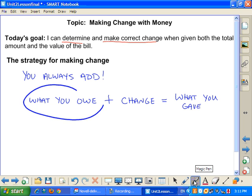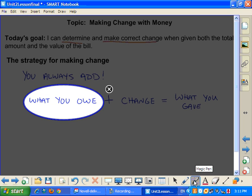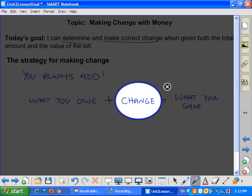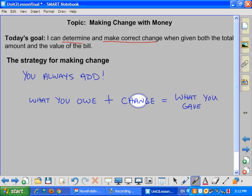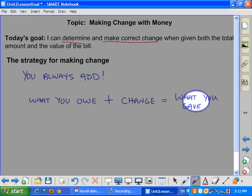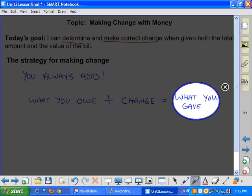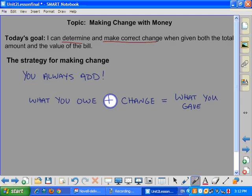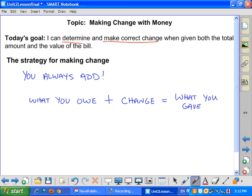So this is what you owe. On the cash register it comes up, you owe $17.35. We are going to work on a strategy where you add the change, how much you should get back, and it's going to equal what you give, like a $20 bill. Very important. And like I said, adding is the easiest approach here. I'm going to do a couple of examples to show you how that works.